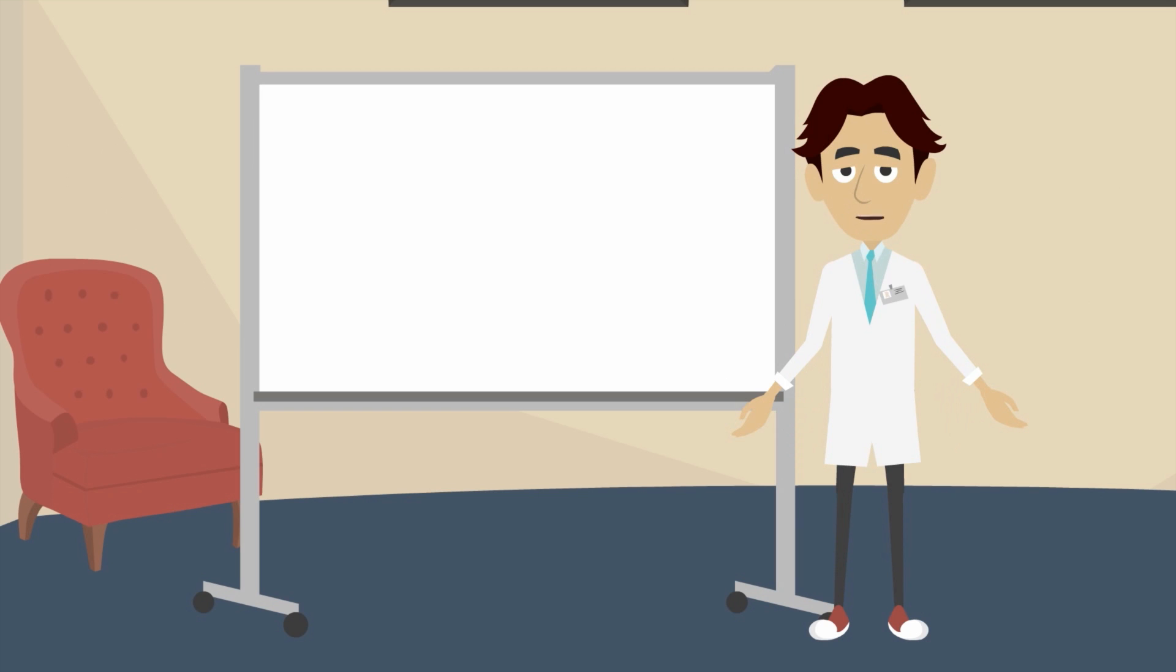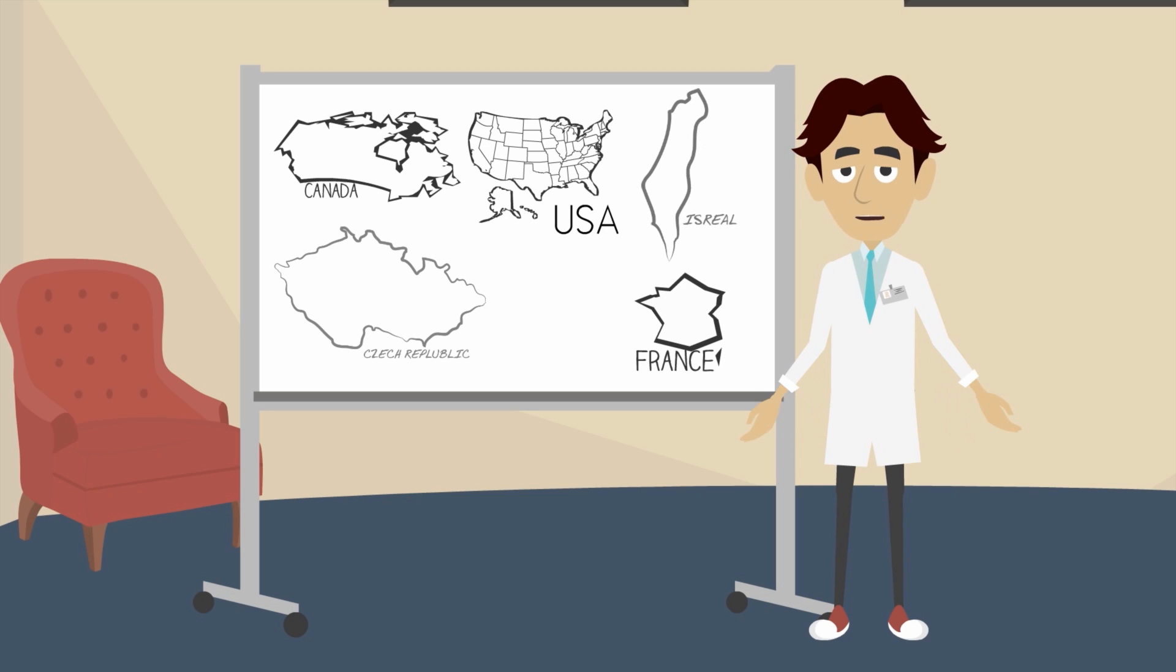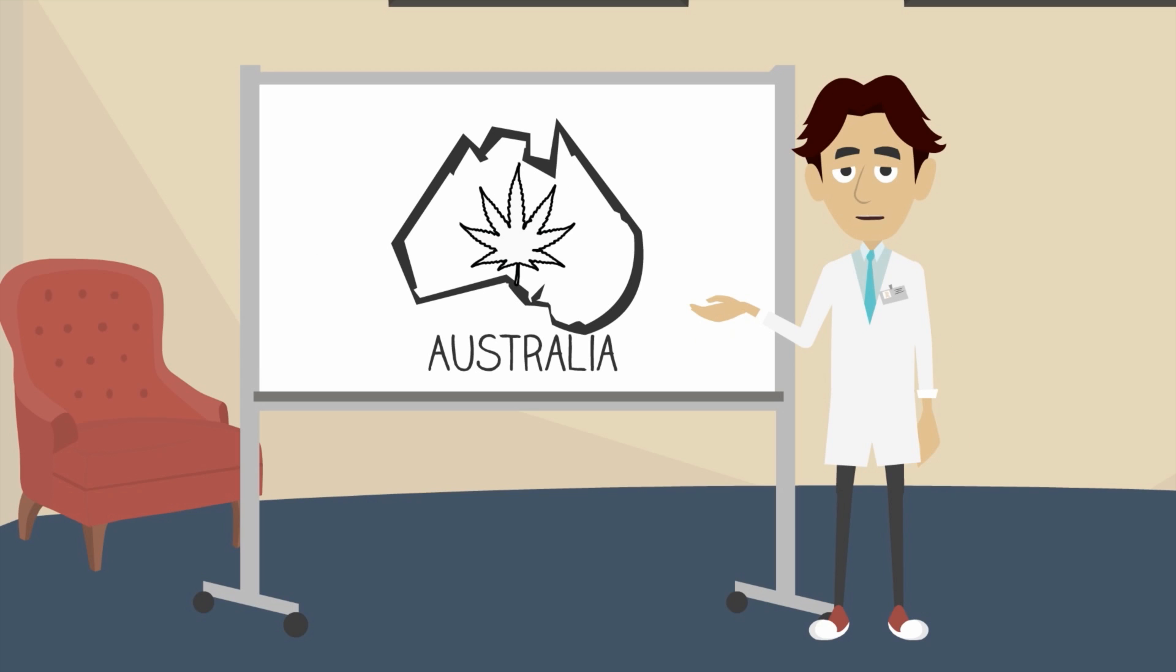Some countries have legalized cannabis or its derivatives for medical use. Canada, parts of the USA, the Czech Republic, France, Israel, and the Netherlands. In Australia, cannabis is illegal, but there are moves to make it legal for medical purposes in some states.